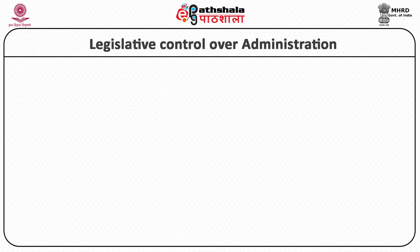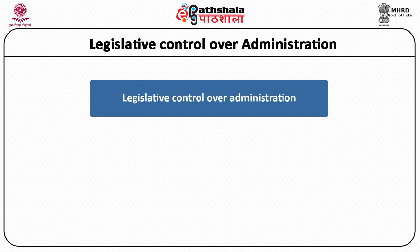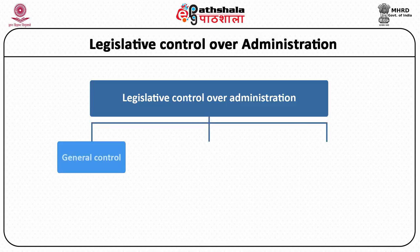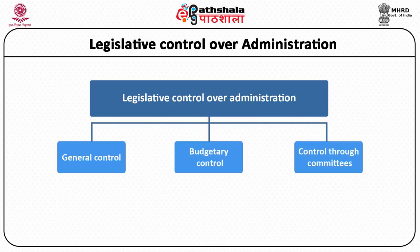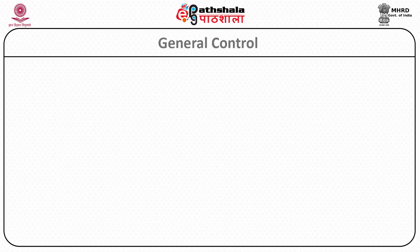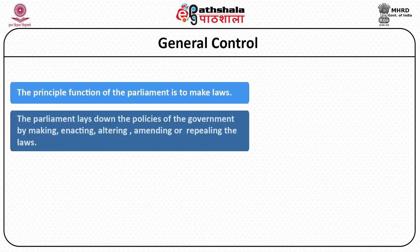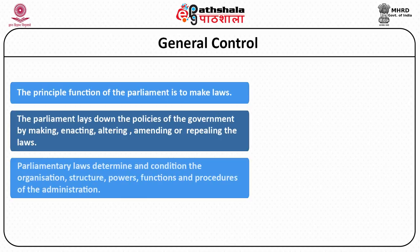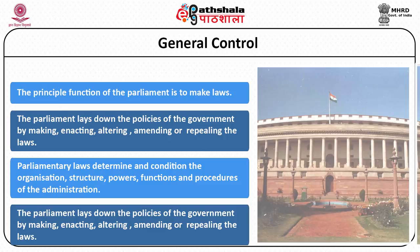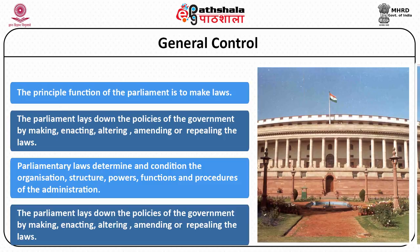Beginning with legislative control over administration: legislative control is exercised through various means. First is general control, second is the budgetary system, and third is control through committees. General control over the policies and actions of the government takes place by asking questions, discussions, motions, and resolutions when the parliament session is on.